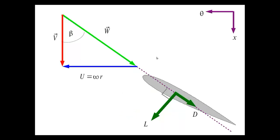Going back to the velocity triangle, we now have a relative flow coming onto the blade. We draw a line — the chord line — and the lift is perpendicular to the relative wind direction while drag is parallel to it. This may explain the confusion: people may think lift should be perpendicular to the chord line of the aerofoil, rather than perpendicular to the incoming flow.